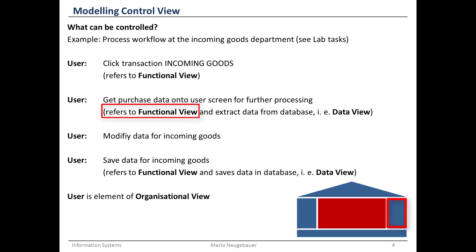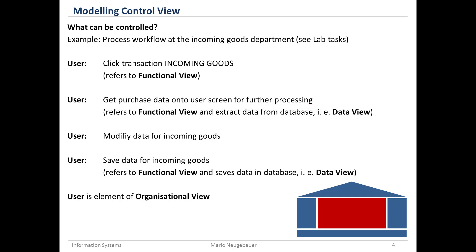This activity refers to the functional view, which should enable you to extract data from the database and make requests. On the other hand, it also refers to the data view, because you are working with data stored in the database. In the background there is a data model, perhaps modeled with an entity-relationship model, containing the data important for the purchase order and the process.